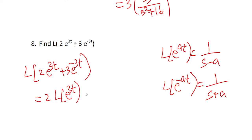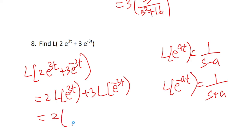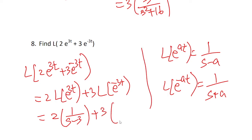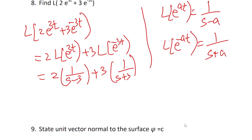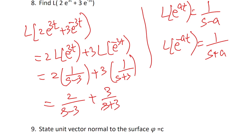Using linear properties, we split: 2·[1/(s−3)] + 3·[1/(s+3)]. That gives 2/(s−3) + 3/(s+3). These are basic Laplace transform sums.